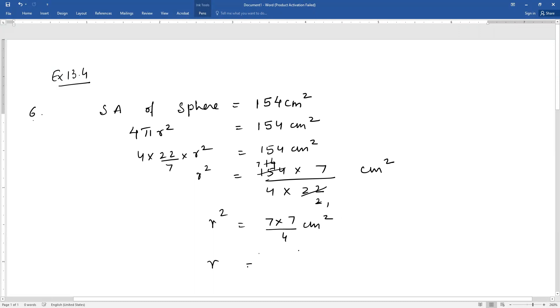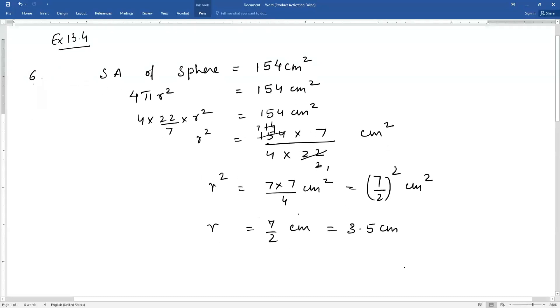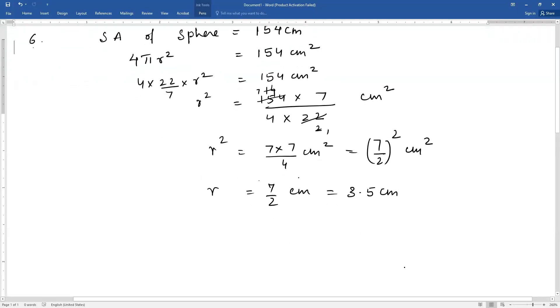This means r is equal to 7 upon 2. This is nothing but (7 upon 2) whole squared equals cm². So r is 7 by 2, and this can be written in decimal as 3.5 cm. The radius of the sphere is 3.5 cm or 7 by 2 cm.